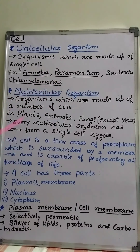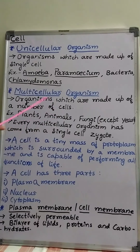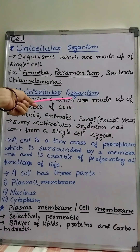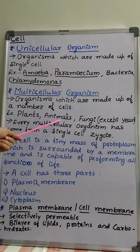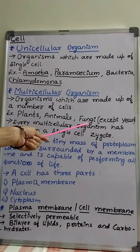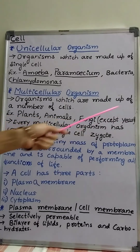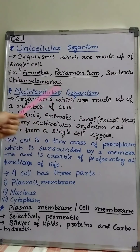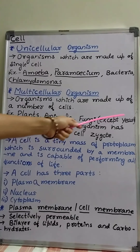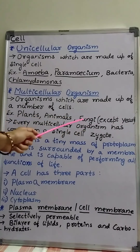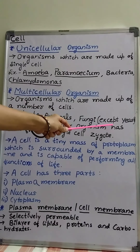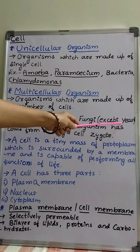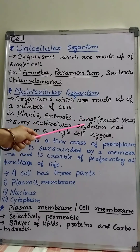Multicellular organisms are made up of a number of cells. Organisms which are made up of many cells are called multicellular organisms. For example, plants, animals including human beings, and fungi — except yeast. Most of the fungi are multicellular organisms, except yeast. Yeast comes under fungi but it is unicellular.